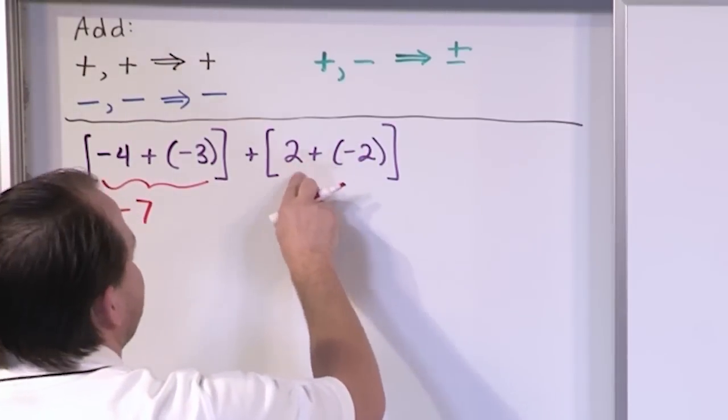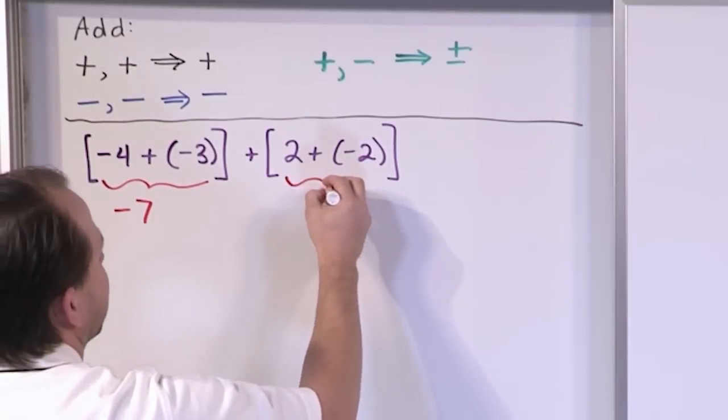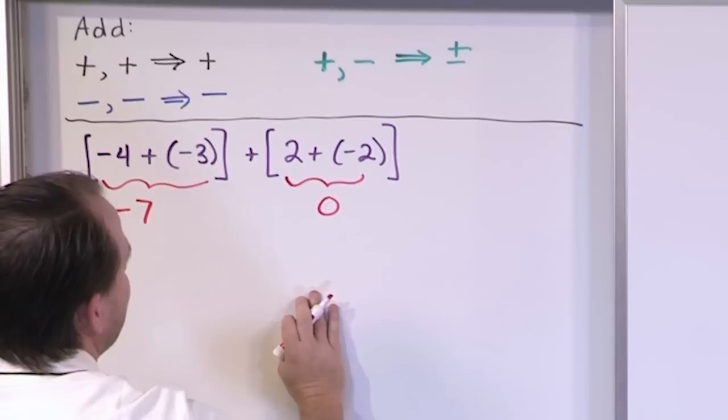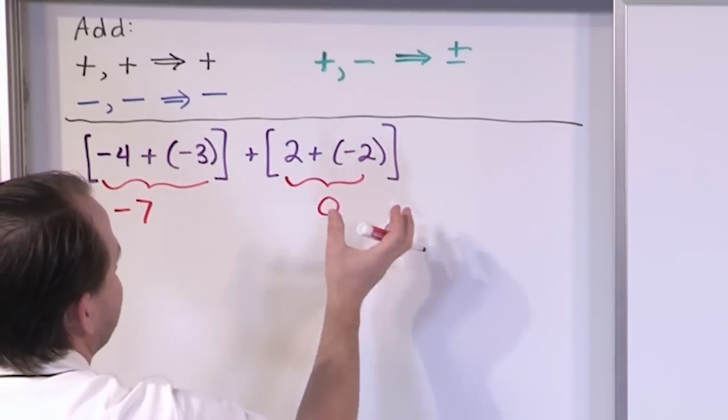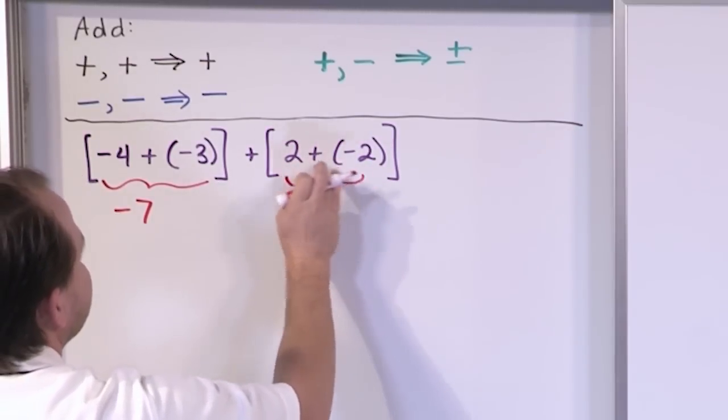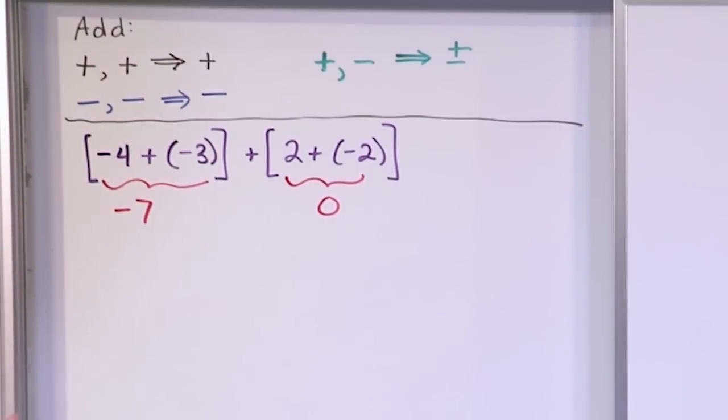Over here, we're adding things together with different signs. So we cover this up, we subtract, we get 2 minus 2 is 0, and it doesn't really matter since it's 0. You normally would take the sign of a larger number, but both of these numbers are the same. So for 0, it doesn't matter.